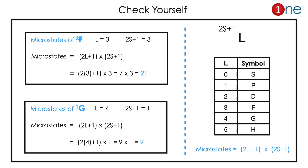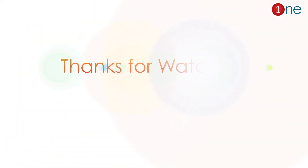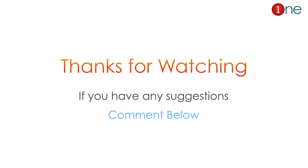The next term symbol is ¹G. Here L equals 4 because the G orbital has L value of 4, and 2S+1 is already given as 1. So the microstates are (2×4+1) × 1 = 9 × 1 = 9. So the total microstates are 9. It is that easy! That's all from this video, thanks for watching.